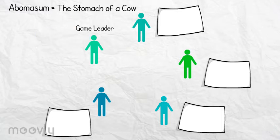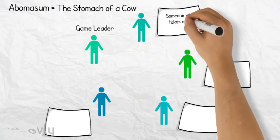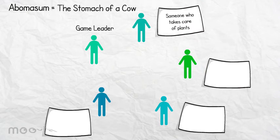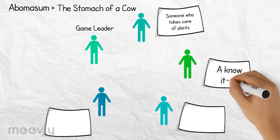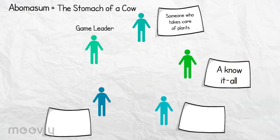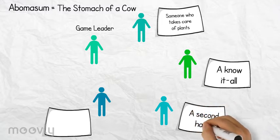One person writes down as the meaning of abomasum: someone who takes care of plants. Another person writes down: a know-it-all. A next person writes down: a second hand. And another person writes down: a douchebag.